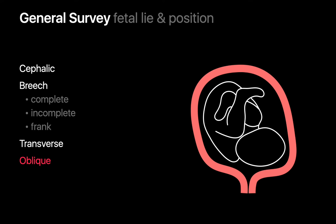An oblique fetal lie is usually unstable and eventually becomes one of the other three presentations. The next step in our general survey is to assess the amniotic fluid, which surrounds and cushions the fetus, allows freedom of movement, contributes to symmetric fetal growth, and helps keep the fetus's temperature constant. Amniotic fluid also prevents infection and helps the development of the fetal lungs, GI tract, and musculoskeletal system.